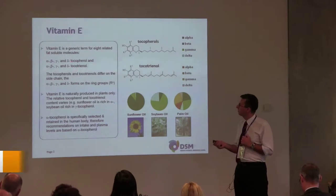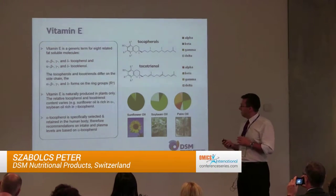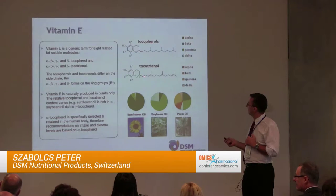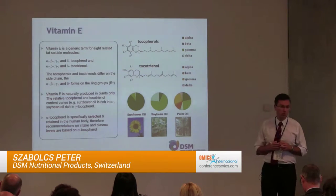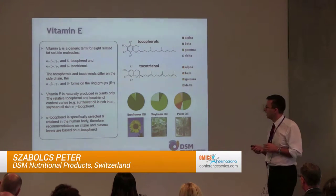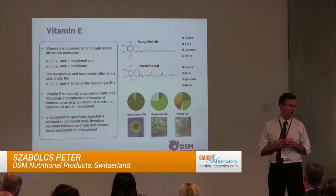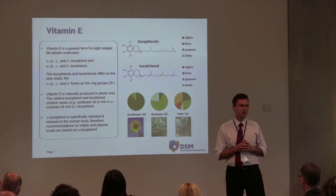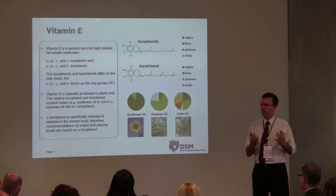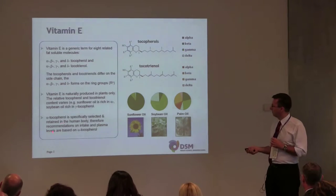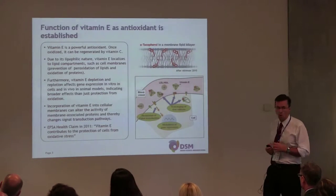It includes alpha, beta, gamma, and delta tocopherols and the corresponding tocotrienols. Vitamin E is naturally produced in plants only, and the relative ratio of tocopherols and tocotrienols varies largely among different plant forms. Alpha-tocopherol has a very specific position because it is the form most retained in the human body, and therefore all recommendations based on nutritional intake or plasma levels are based on alpha-tocopherol.